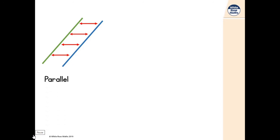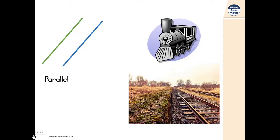It doesn't matter if lines are horizontal, vertical, or diagonal — being parallel is about never meeting the other line. People often talk about parallel lines like train tracks: the left and right tracks never meet. There are special symbols we use to show parallel lines — they are arrows placed on both lines. When you've got an arrow on both lines, that means they're parallel. There's no need to get a ruler out to check — that symbol tells you they're parallel.